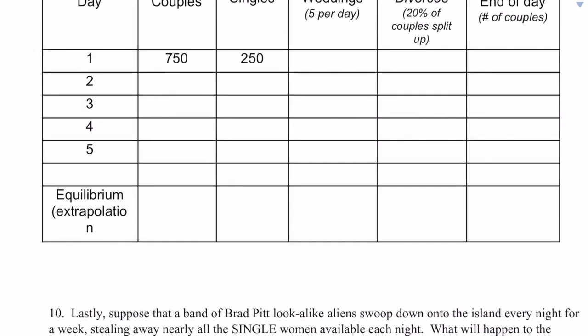We will reach equilibrium when the weddings equal divorces. We already know what that's going to be — it's going to be five and five, because there's only five per day. It's not a percentage, just five weddings per day.